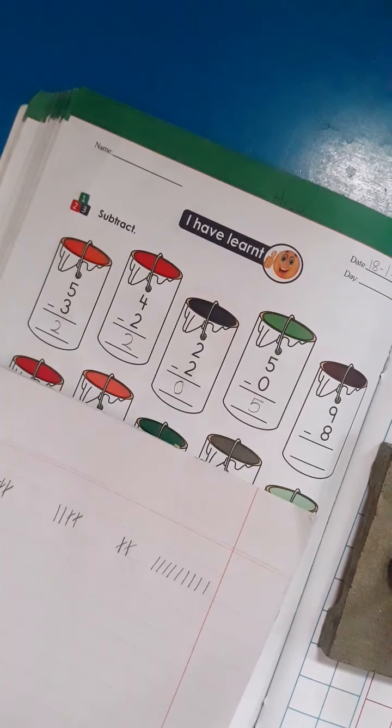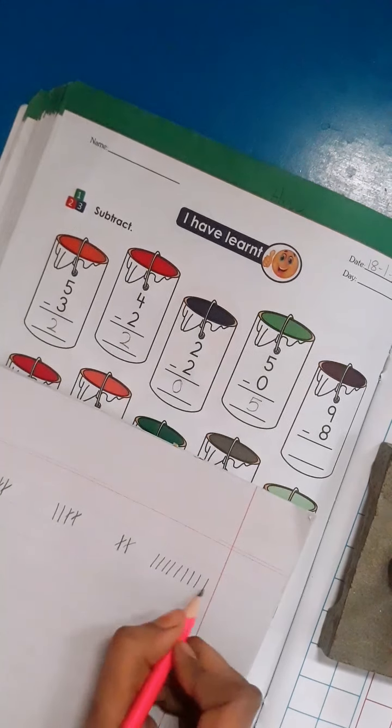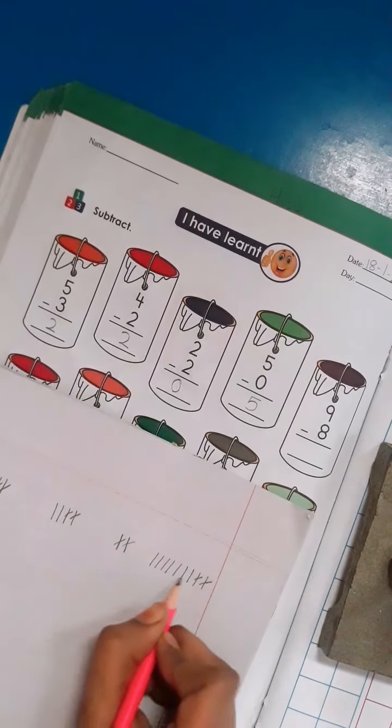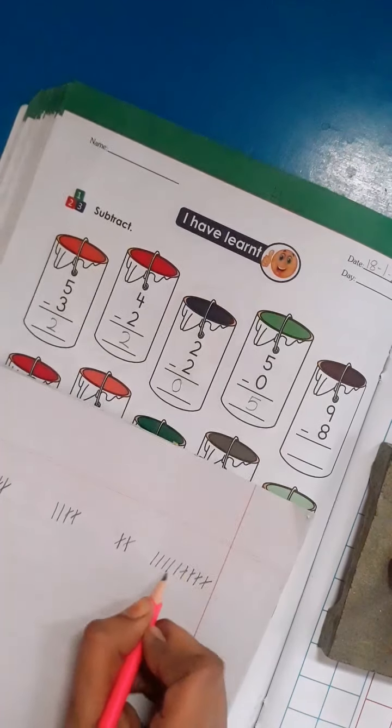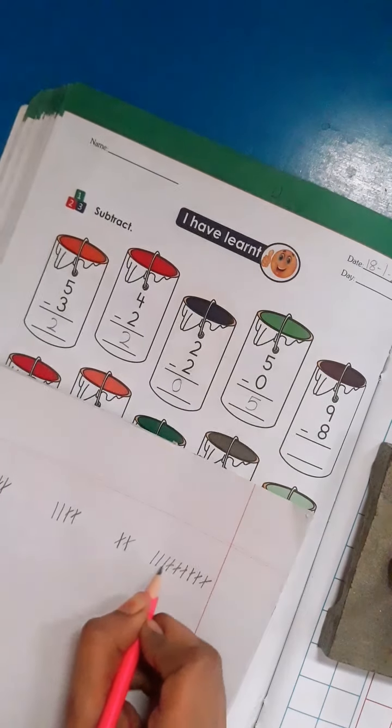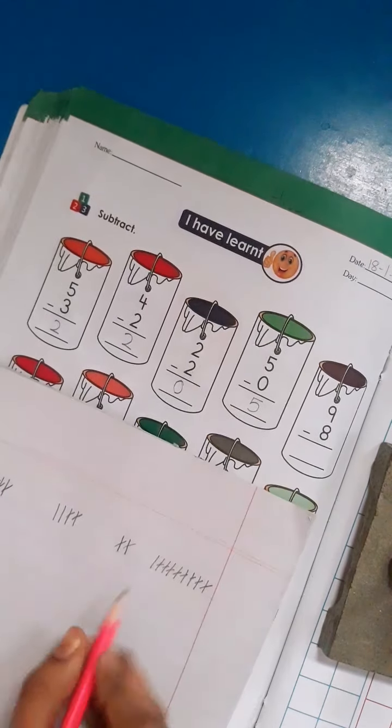9 lines. 9 main se kitne minus karne hai? 8. I will cross 8 lines here. 1, 2, 3, 4, 5, 6, 7, 8. Baakye humare pas kitne bachi?